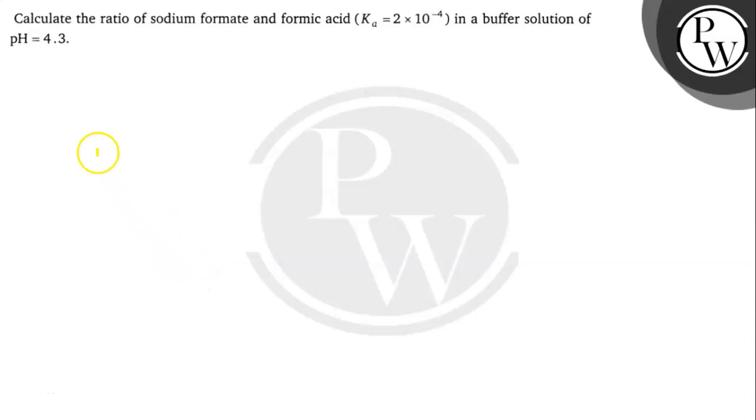Let's read this question. Calculate the ratio of sodium formate and formic acid, Ka is 2 into 10 to the power minus 4, in a buffer solution of pH is 4.3. So let's solve this question.